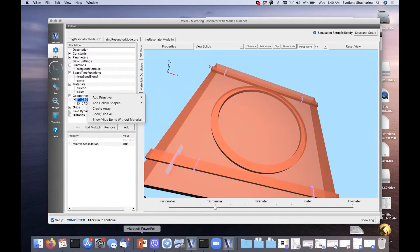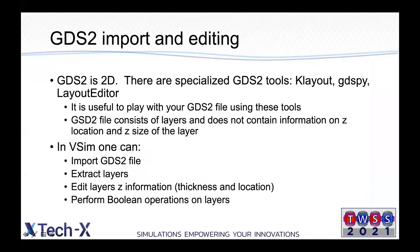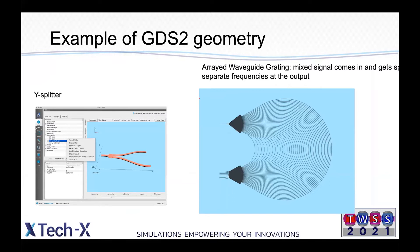Examples of GDS geometries are shown here. On the left is a Y-splitter, where the input light gets split in two directions. A more advanced device shown on the right is the arrayed waveguide grating — a multiplexing/demultiplexing device used for switches and telecommunications. A signal comes in consisting of multiple wavelengths, and due to the intricate waveguide structure, the signal gets split into outgoing waveguides, each carrying a single frequency. This is why photonics is so interesting — it allows packing lots of information into one signal and demultiplexing it at the end.